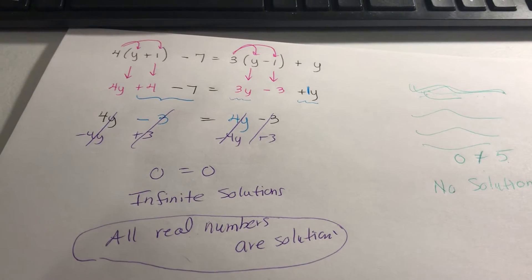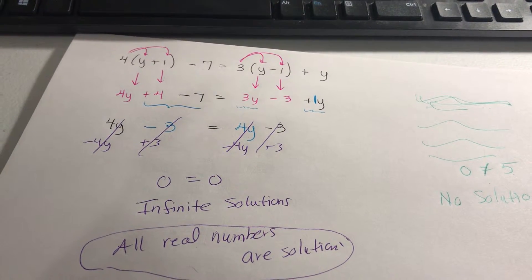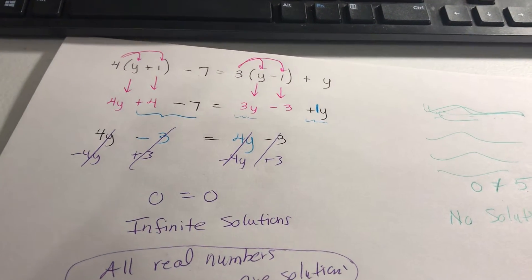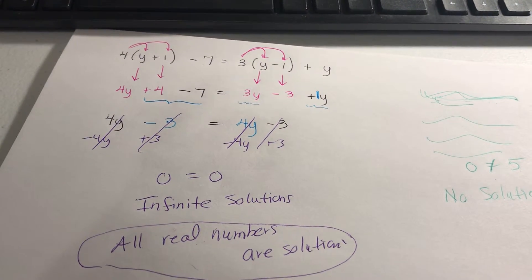Any number in the world. I could stick 1 in there. I could stick 7 in there. I could stick negative 2 in there. I could put 3.15 in there. I could put any number I want. It'll always check.